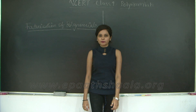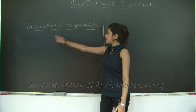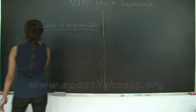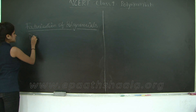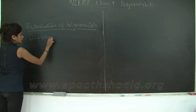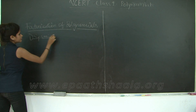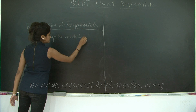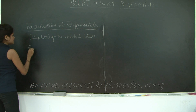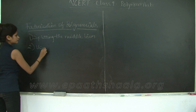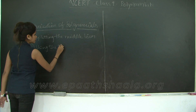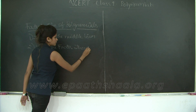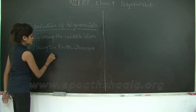Hello students, let's continue with polynomials. Today we will be talking about factorization of polynomials. Now there are two ways to factorize polynomials: the first one being splitting the middle term, and the other one is by using the factor theorem, also called the hit and trial method.